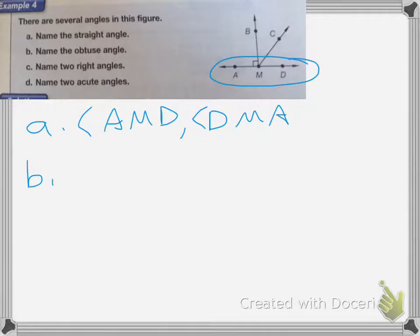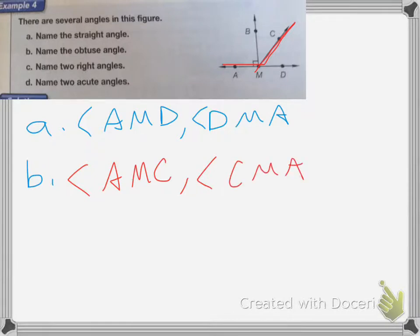B, name the obtuse angle. So the obtuse angle means it's going to be greater than 90 degrees. So the angle that's greater than 90 degrees is going to be AMC. It's going to be angle AMC or it's angle CMA. Notice that the vertex of the angle is always the middle letter.